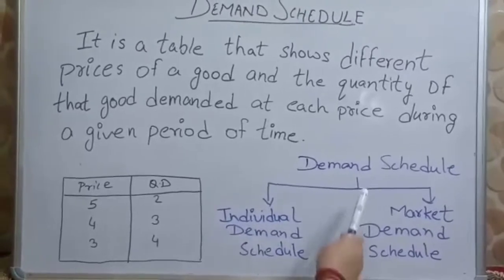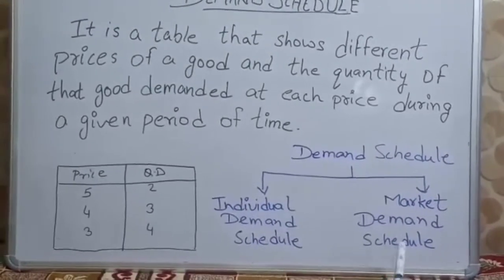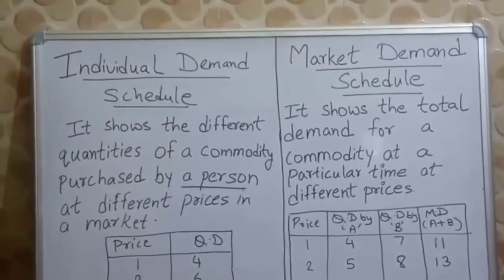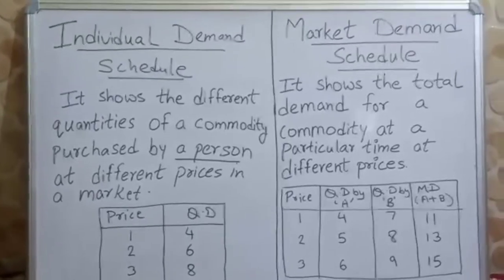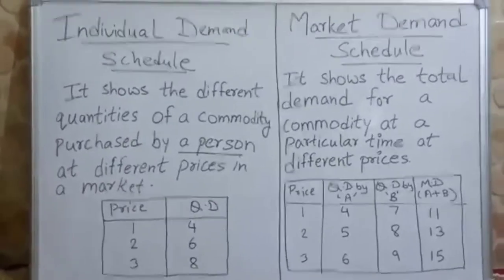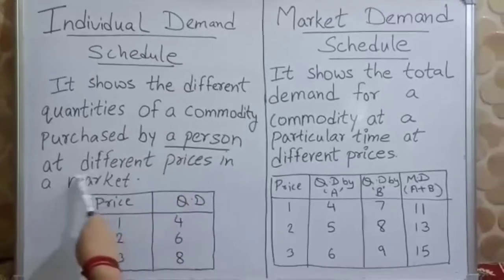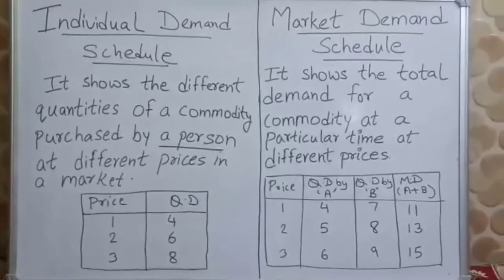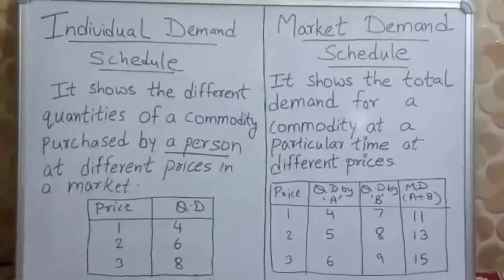Demand schedule is of two types: individual demand schedule and market demand schedule. Individual demand schedule shows the different quantities of a commodity purchased by a single person at different prices in a market.